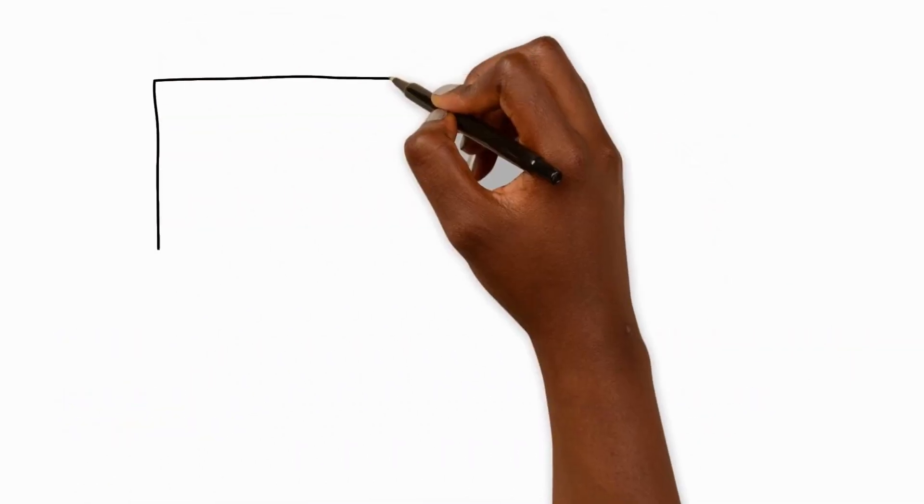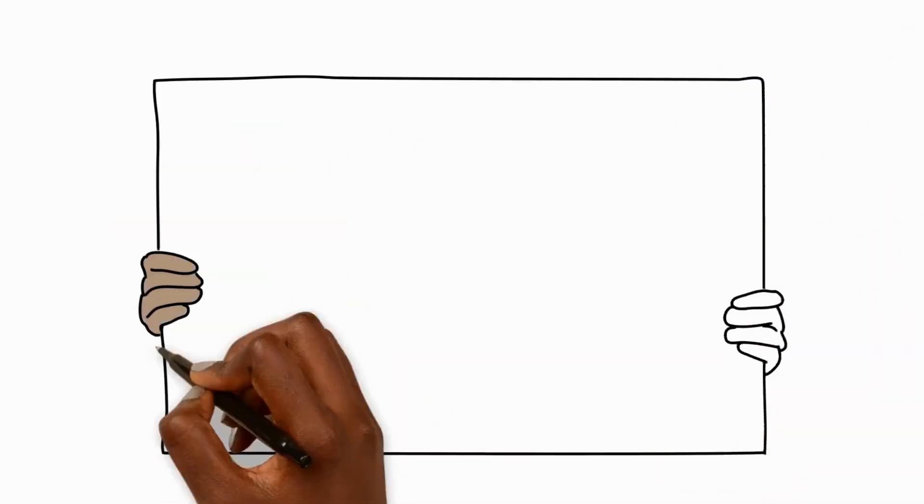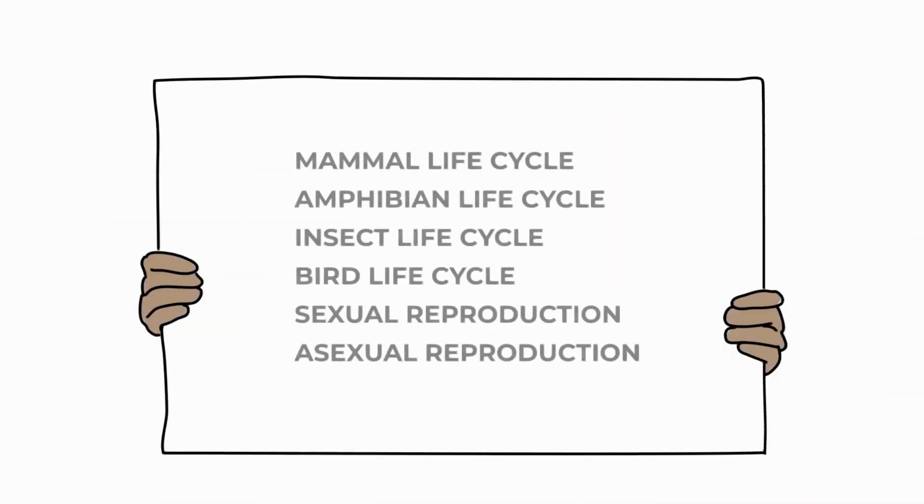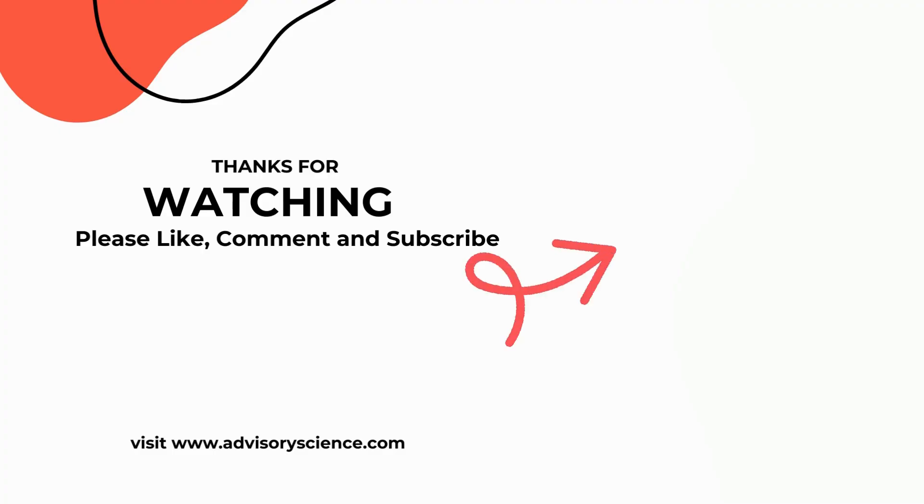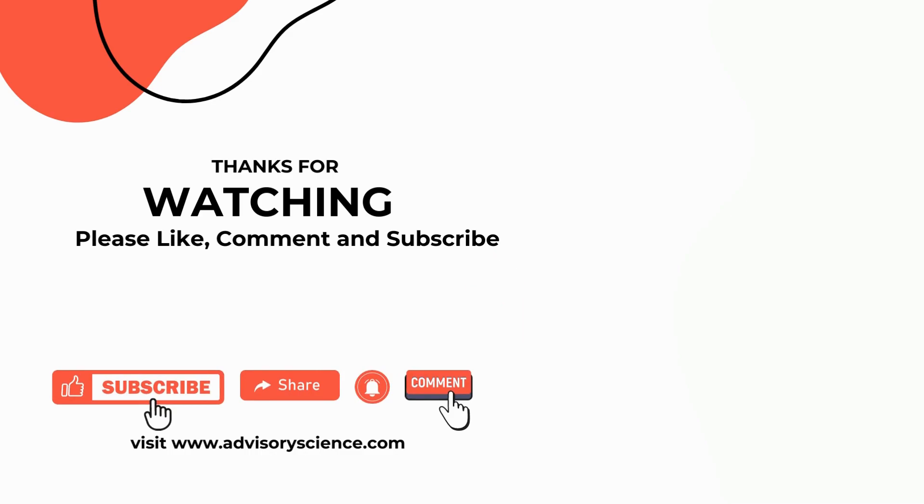And now you know all about different animal life cycles and how we get the variety of plants and animals on Earth. Thanks for watching. For more science resources, visit our website, advisoryscience.com, and check out the blog for even more educational content. Don't forget to subscribe and hit the notification bell to stay updated on our latest episodes.